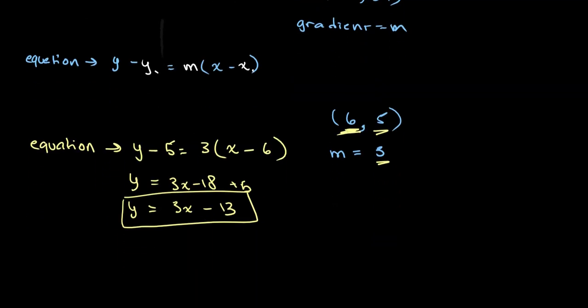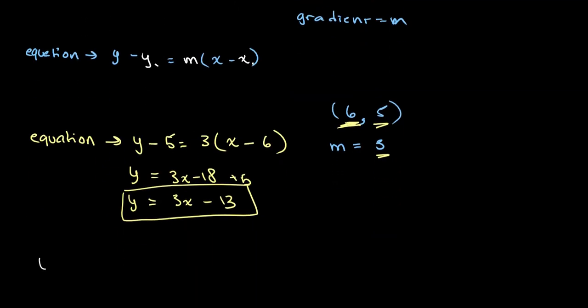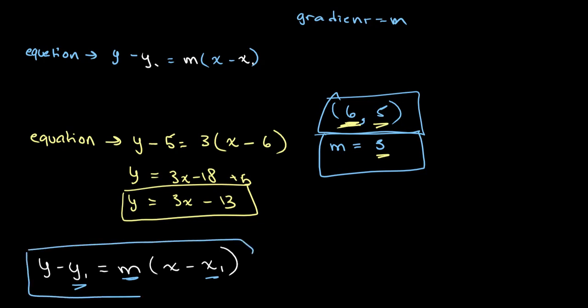So the reason we use this equation y minus y1 equals m times x minus x1 is because it's very simple for us to find the equation of our line if we only have a point and the gradient. This is all that we need in order to find the equation of our line, and this equation really just makes your life much easier in solving these types of problems.